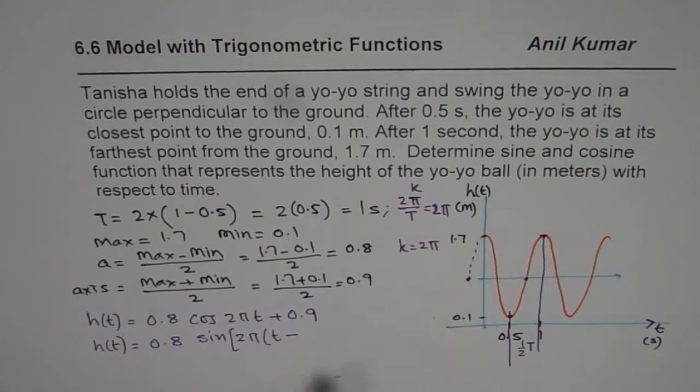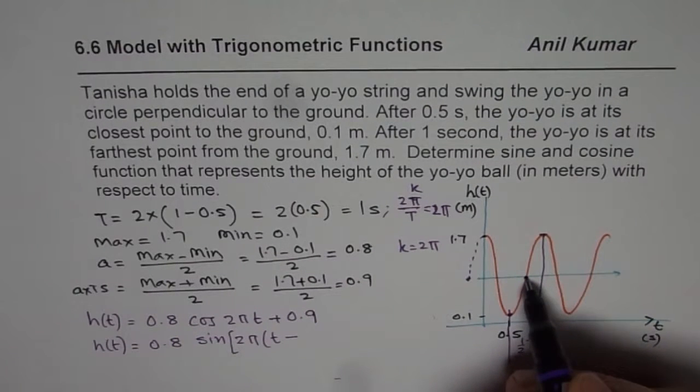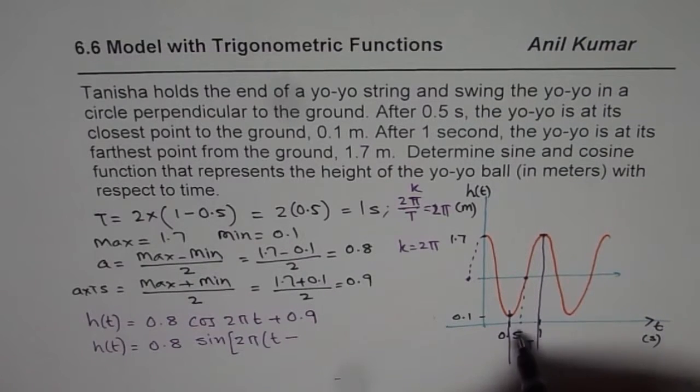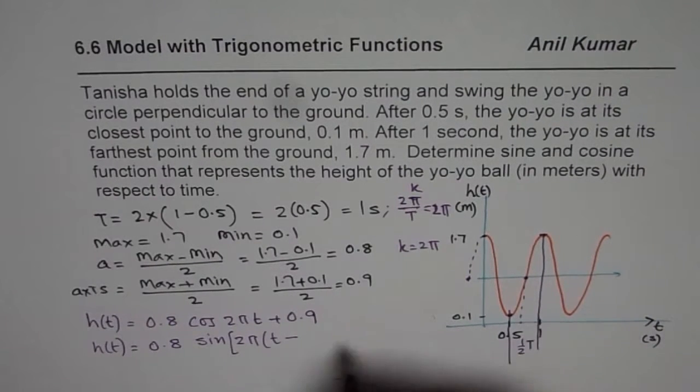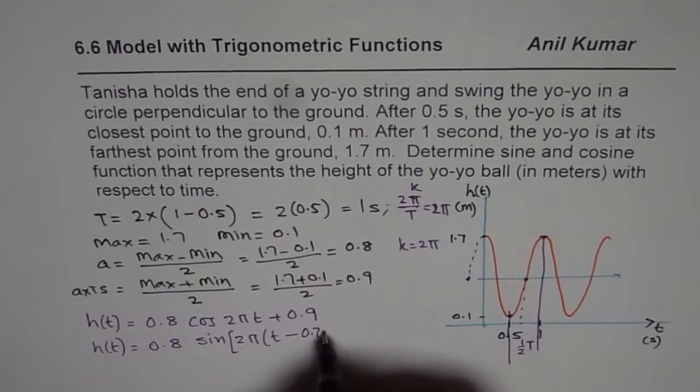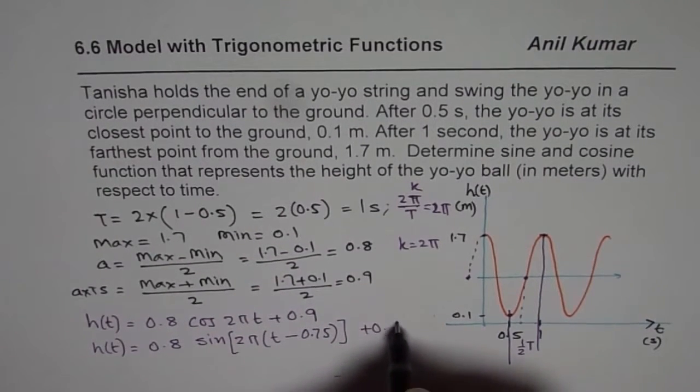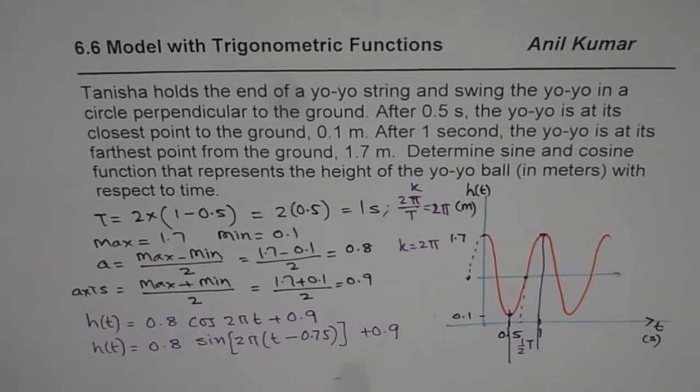t minus. If I am using this value, I will use 0.75. Since this starts at 0.75, this is 1. So minus 0.75 plus 0.9, if I am using this value,